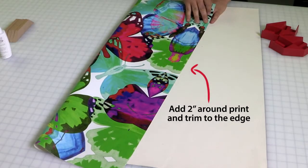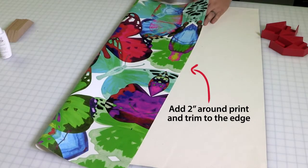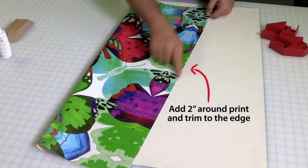Be sure to add two inches around your print to allow for the depth of the bars and trim your canvas right to the edge of the print.